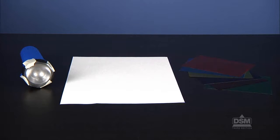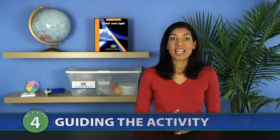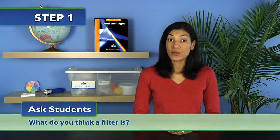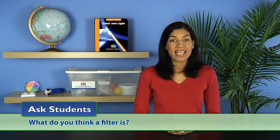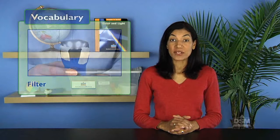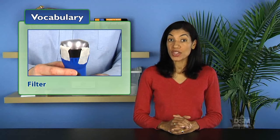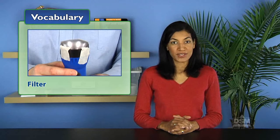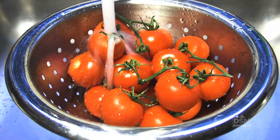To begin the activity, ask the students what you think a filter is. Accept all reasonable responses. Then define a filter as something that lets certain things through but blocks others. For example, a kitchen strainer is used to filter the water from spaghetti or vegetables.